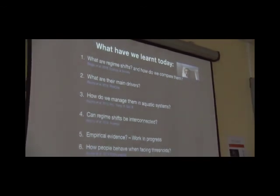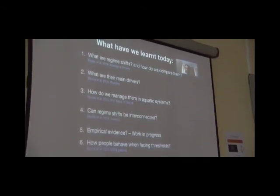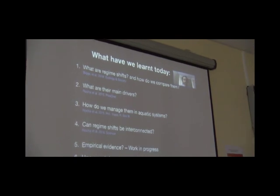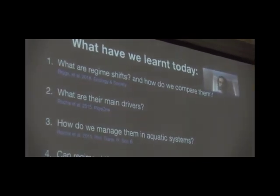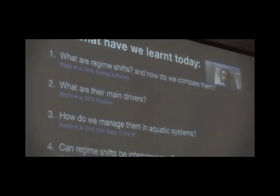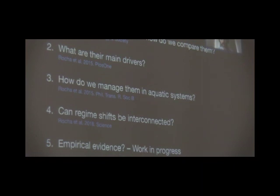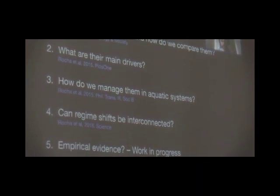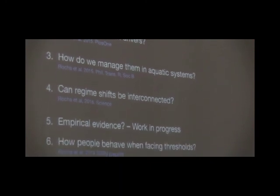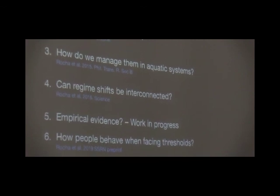I will summarize shortly what we have learned today. Regime shifts are large and abrupt persistent changes in the function and structure of systems, and you learned how the Stockholm Resilience Centre developed this regime shifts database in order to compare those regime shifts. By using this causal network approach, we are able to ask questions like what are the main drivers of regime shifts. Probably we found that food production, climate change, and urbanization were the key players. And how do we manage them? When we investigated the aquatic systems, we saw that by studying the bundles of drivers that co-occur together, we can prevent regime shifts from happening. We also asked the question, can regime shifts be interconnected? And the answer is yes, they can be in a number of different ways. Most importantly, through domino effects and hidden feedbacks. I presented some empirical evidence of that occurring with trade of salmon.